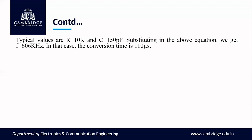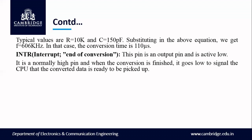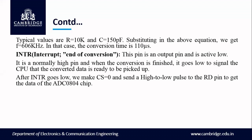INTR stands for end of conversion. This pin is an output and is active low — it is normally high, and when the conversion is finished, it goes low to signal the CPU that converted data is ready. After INTR goes low, we make CS 0 and send a high to low pulse to the RD pin to get the data out of the ADC chip. We need to make chip select low and send a high to low pulse on RD, then we can read the data available on the data pins to the microcontroller.